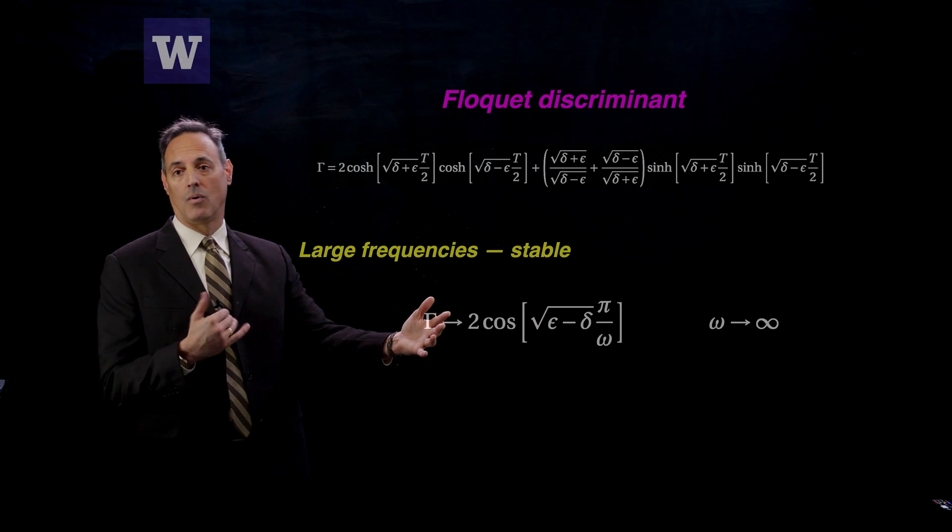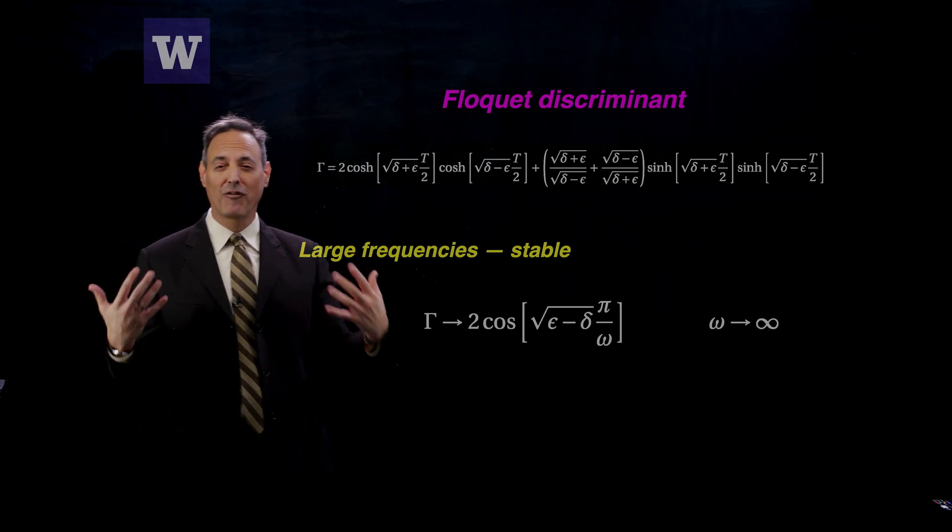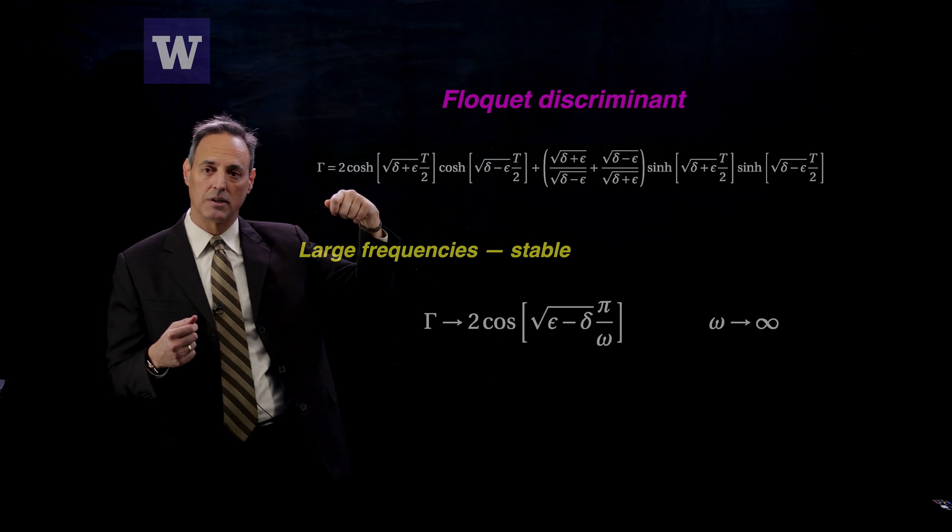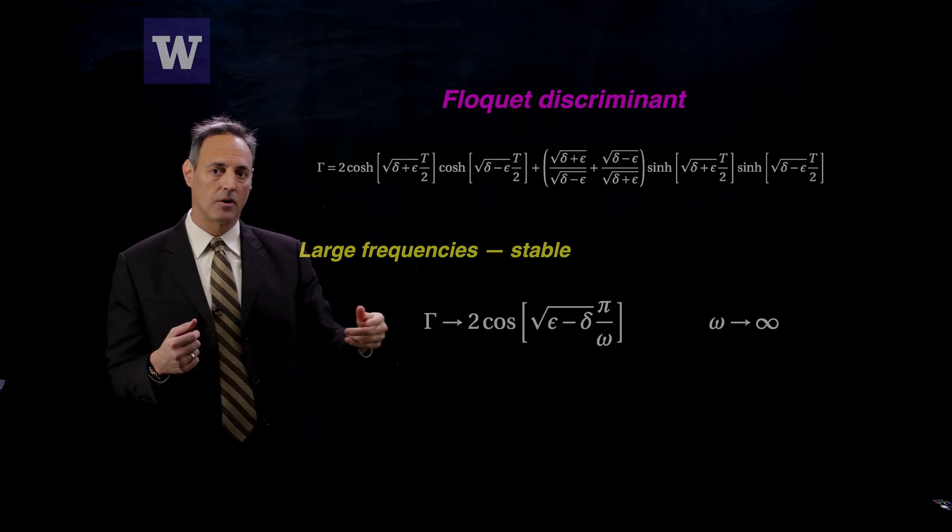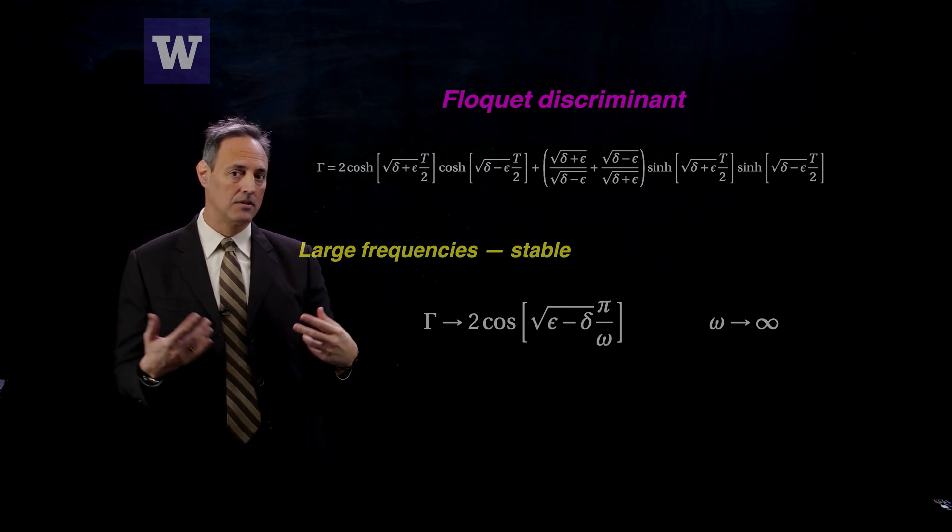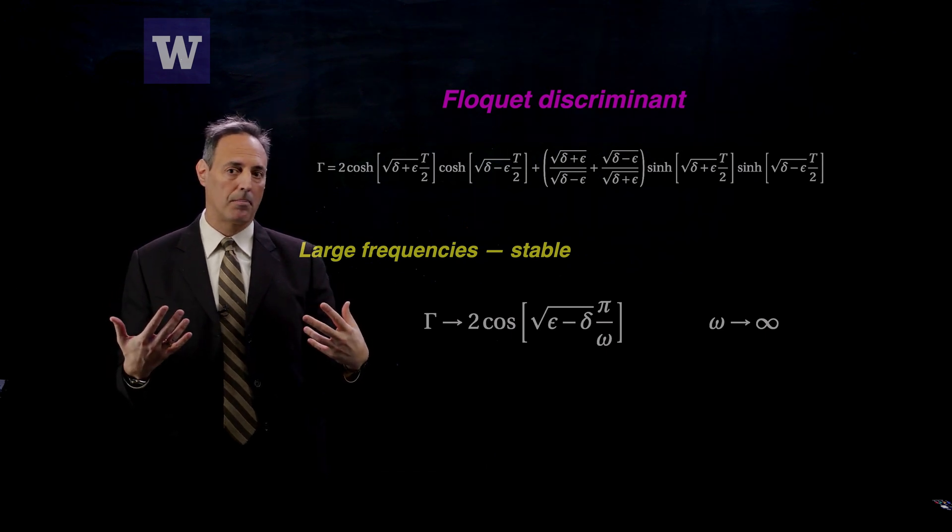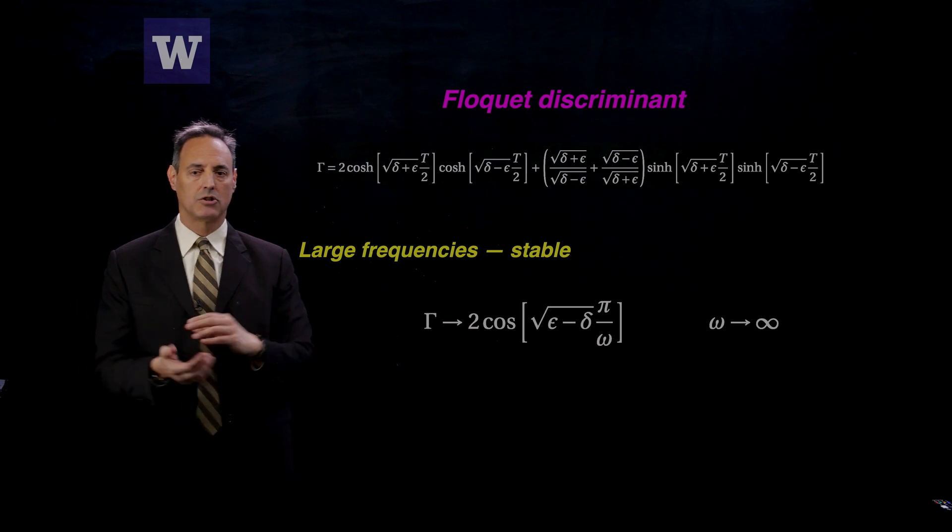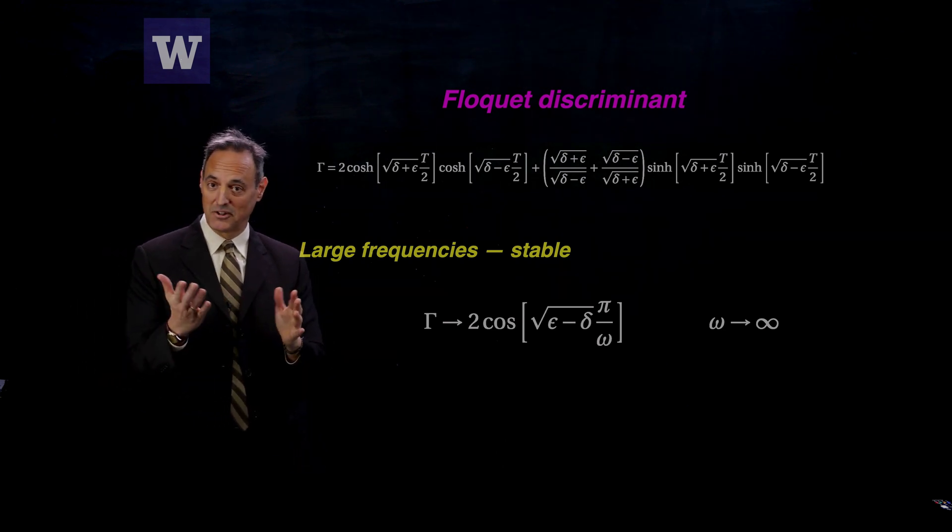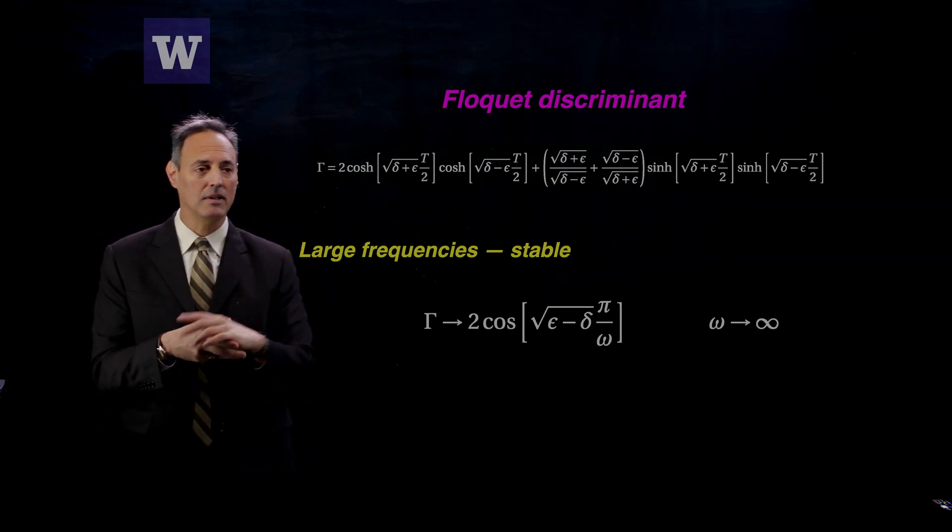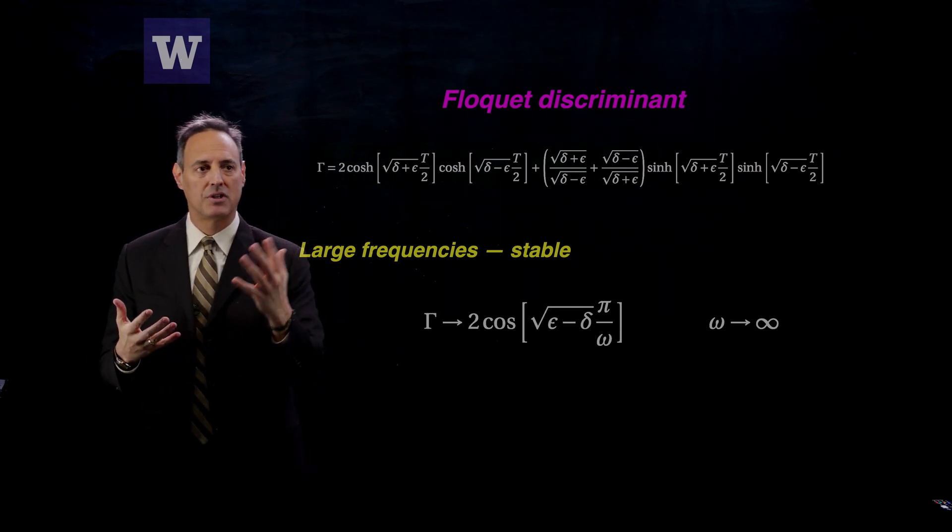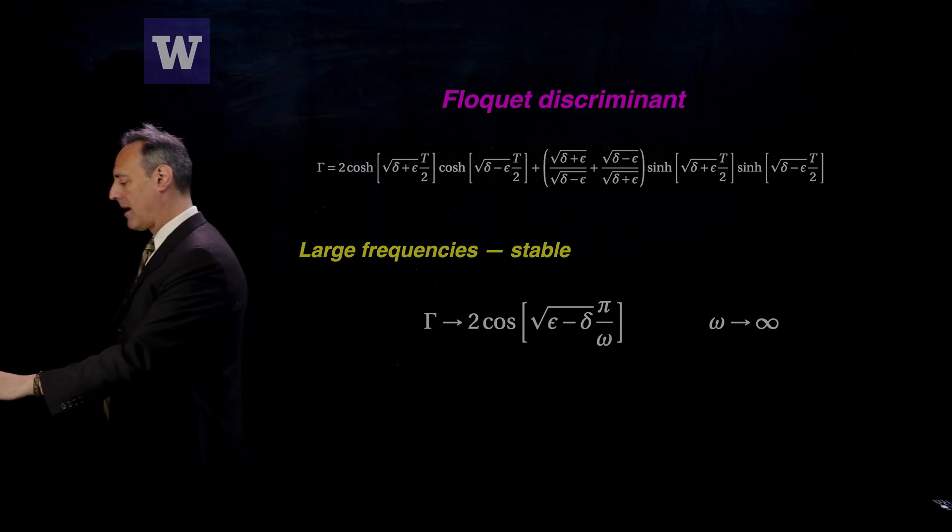So it's 2 or less. So for high frequency oscillations of that thing, when I'm forcing it at very high frequencies, what it tells you is the Floquet discriminant satisfies the stability properties that we talked about in the last lecture, which is the Floquet discriminant is less than 2. That's interesting. That tells you, at least for high frequency oscillations, I should be able to stabilize that pendulum in the right position.